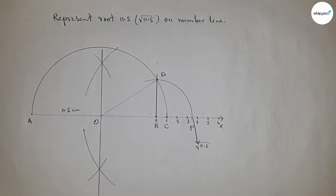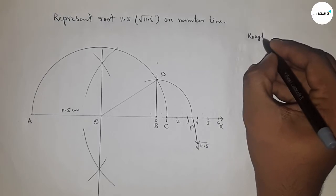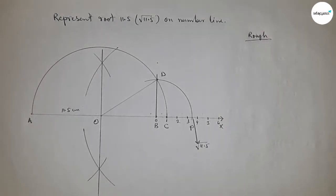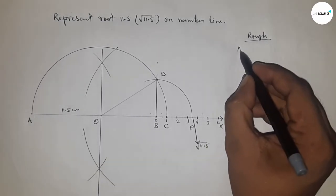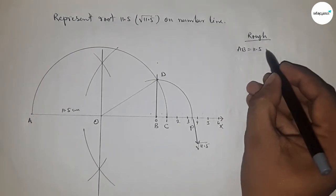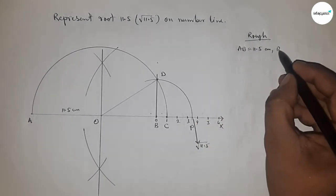Now let's discuss the calculation. Given: AB equals 11.5 centimeters, BC equals 1 centimeter. So we can write AC equals 11.5 plus 1, which is 12.5 centimeters.